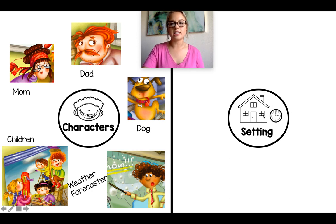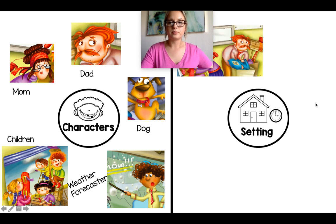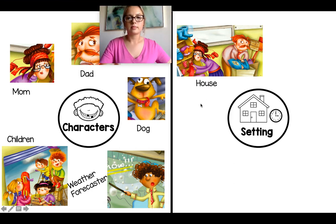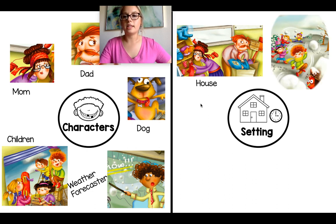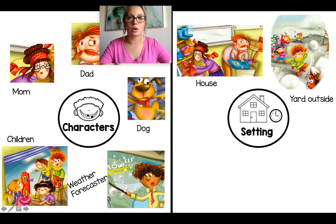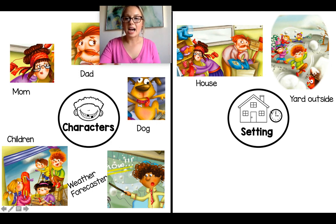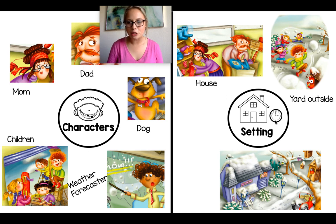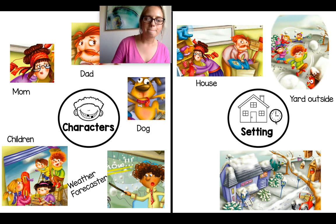Let's talk about the setting of the story — the setting is where the story happened or when, what time of year it was. Where is this first part of the story happening? In a house, or a home. What about this part? They're outside — on a yard or a field covered in snow. I know they're outside because you can see the sky and trees and bushes, and trees don't grow inside your house. What season do you think the story happened in? Winter, spring, summer, or fall? When does it snow? Winter.